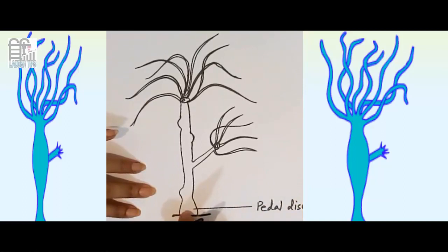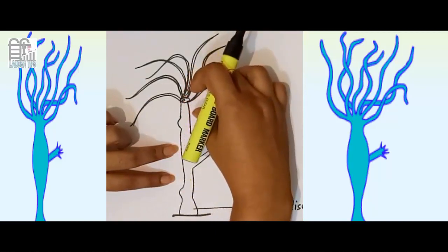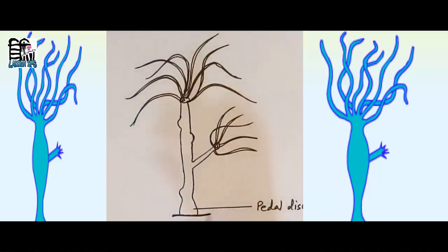Then this is actually pedal disk, and this part is trunk, and the upper part is hypostome.